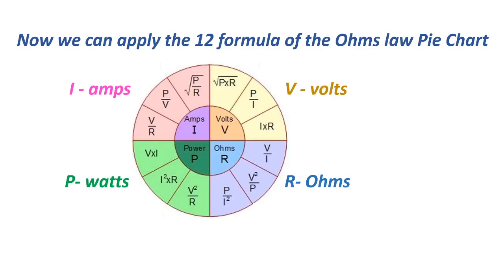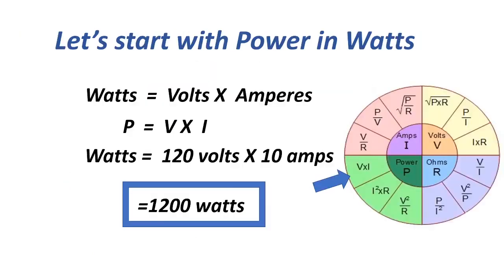Let's start with power in watts. Watts equals volts times amperes, or P equals V times I, equals 120 volts times 10 amperes, equals 1,200 watts.